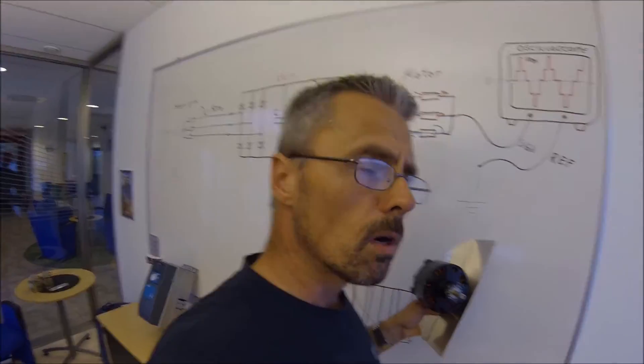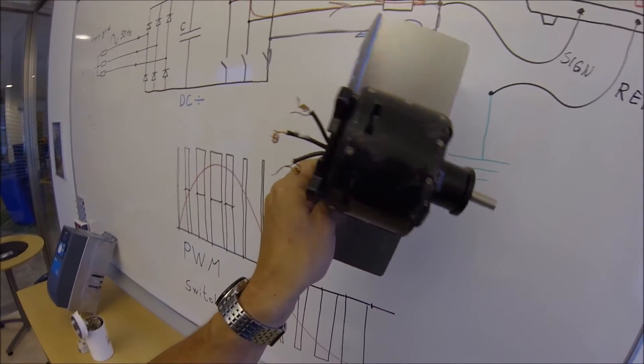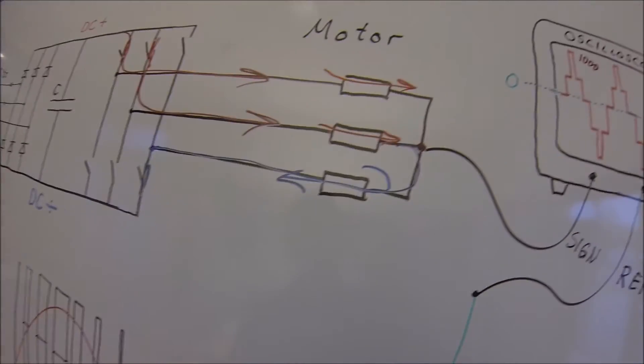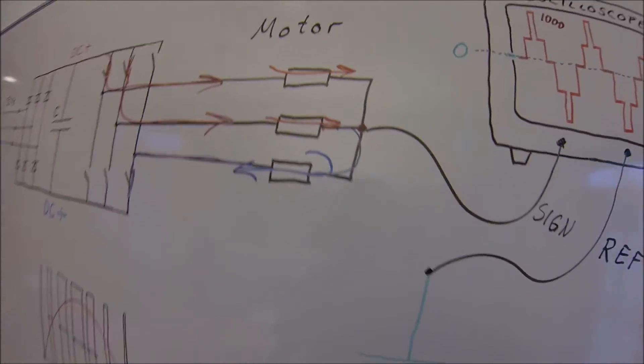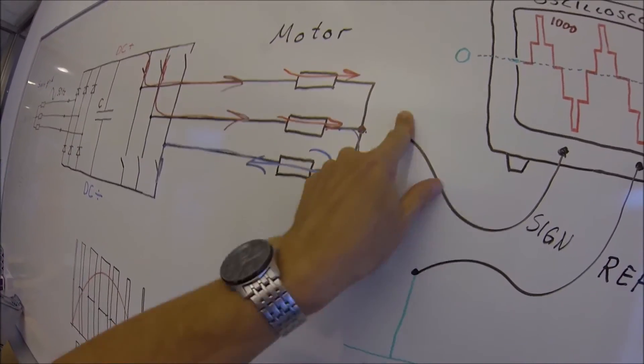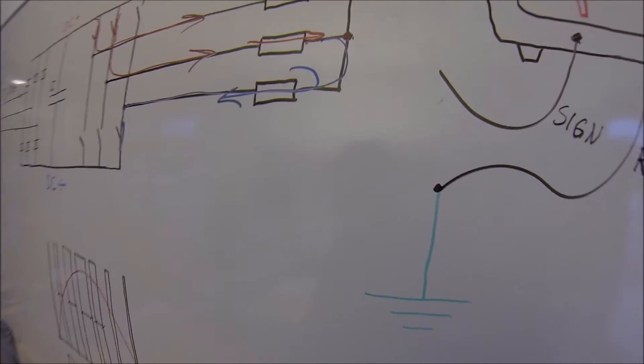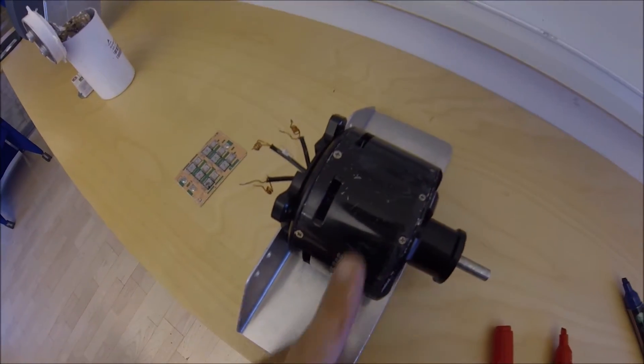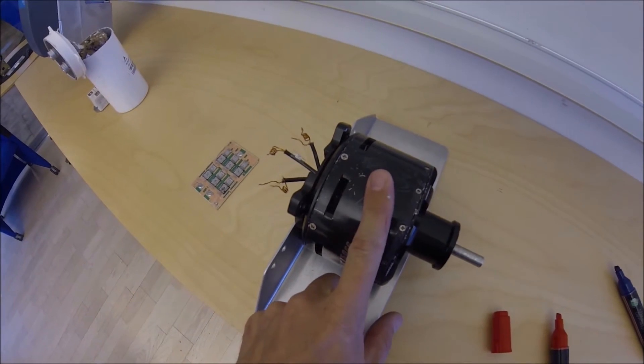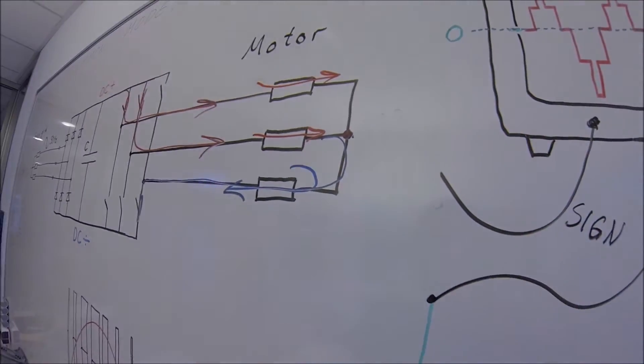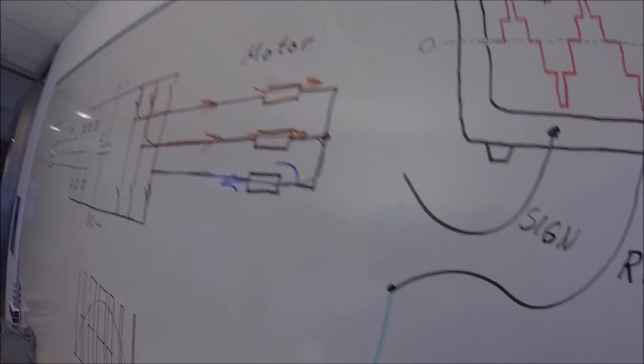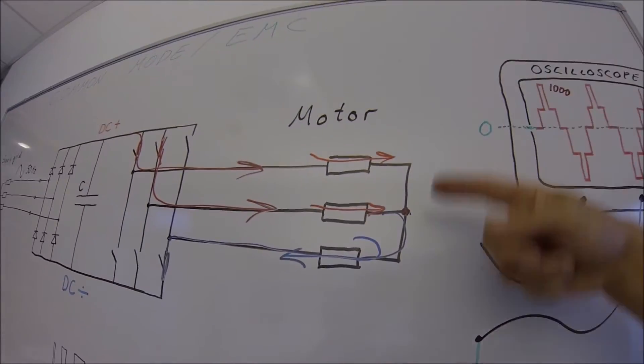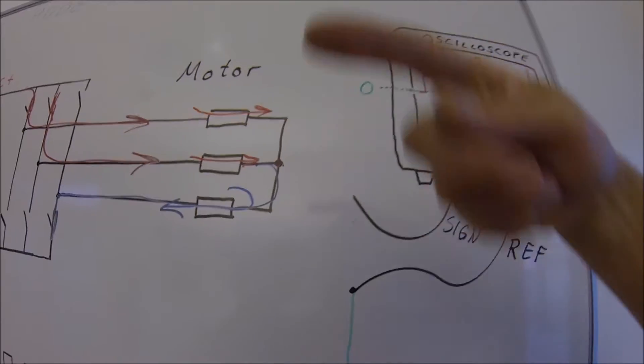What is the consequence on a motor when you have a star point which is jumping up and down? Well, actually not much because this star point is floating inside all motors. There is no connection between this star point and the metal in the motor. At least not in an ideal world. So we allow the star point to rotate inside the motor.